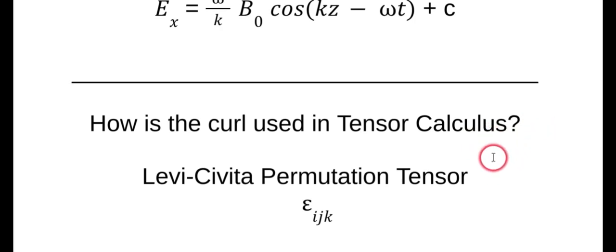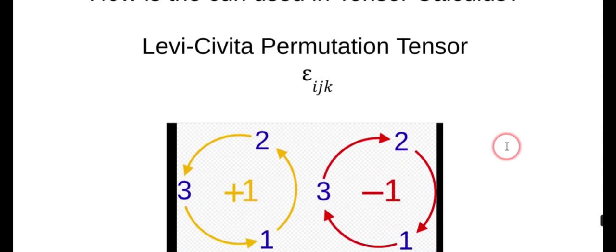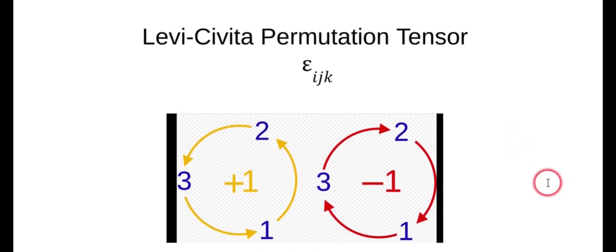And how do you use it? Well, you draw these cool little pictures here. So if you're going in this direction, so you're going 1, 2, 3, or 2, 3, 1, or 3, 1, 2, epsilon is positive 1. If you go the opposite direction, 1, 3, 2, 3, 2, 1, or 2, 1, 3, epsilon is a negative. And if any of these repeat, epsilon is 0. So in other words, E1, 1, 2 is 0.